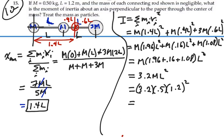2.30 kilogram meter squared. So that's our answer: 2.30 kilogram meters squared is the moment of inertia of this rigid body about an axis perpendicular to the paper through the center of mass.